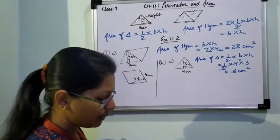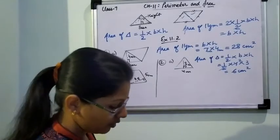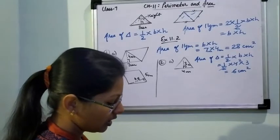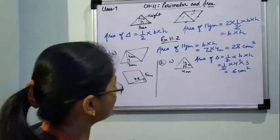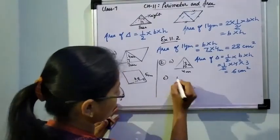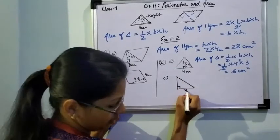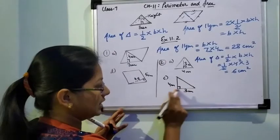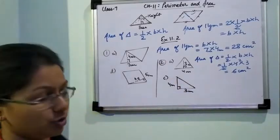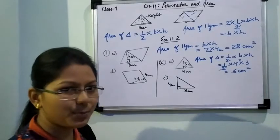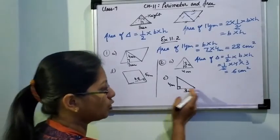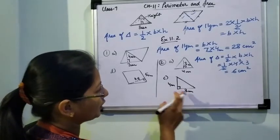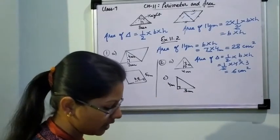For part B, base is 5 and height is 3.2. Multiply 5 into 3.2 and then divide by 2 to get the answer. For part C, the diagram shows a right angle triangle where the 90-degree angle is marked. In this case, the horizontal side can be taken as base and the vertical side as height. So again apply half into base into height to get the answer.